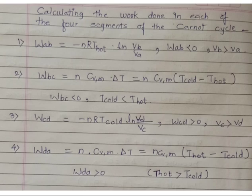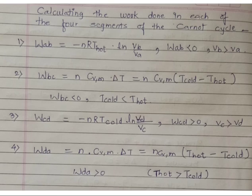For W_CD — isothermal compression — the equation is W_CD equals negative NRT_cold times ln(V_D / V_C), where V_C is greater than V_D. For W_DA — adiabatic compression — the equation is W equals N times C_vm times delta T, with temperature change T_hot minus T_cold. Here W_DA is greater than zero since T_hot is greater than T_cold. These four equations give the work done in each step of the Carnot cycle.